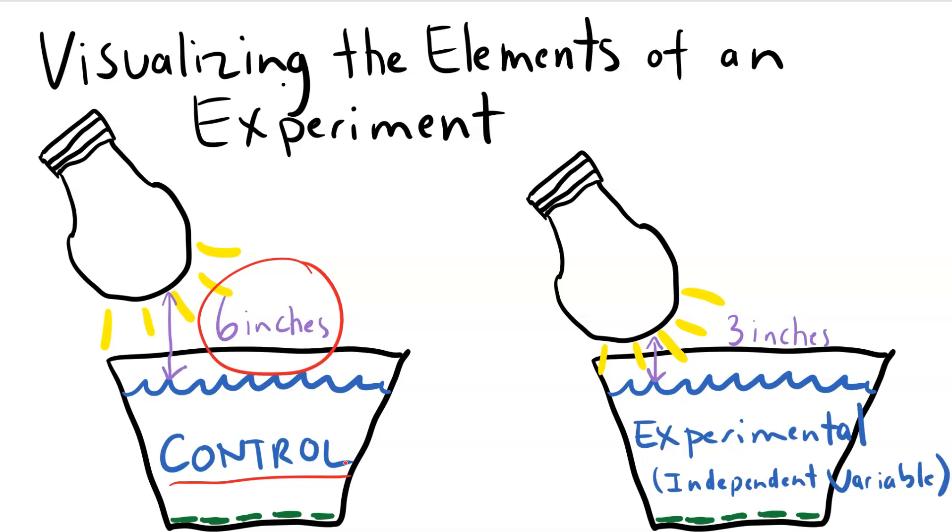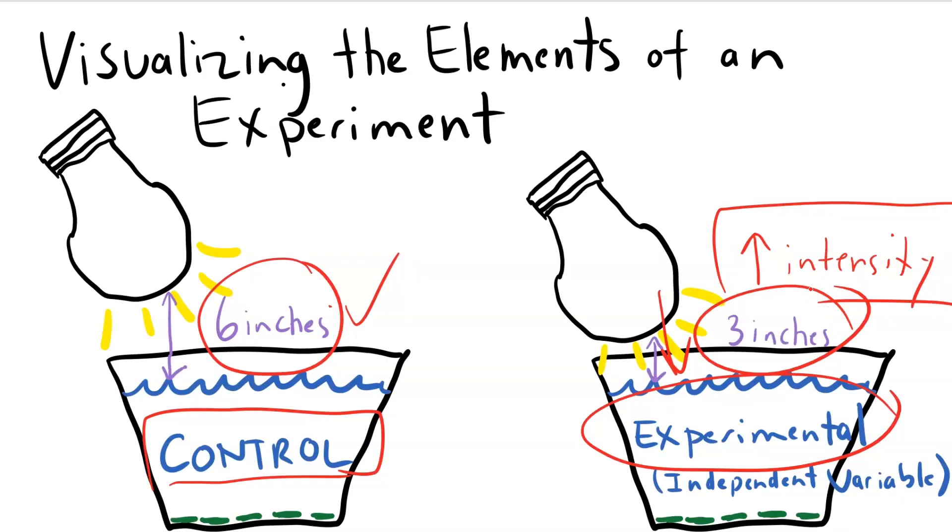Keep in mind that light intensity is the independent variable that John is studying. John hypothesized that the cup with the greater light intensity would photosynthesize better. So to increase intensity, what John has done is move this light bulb closer to the experimental subjects—to the leaf discs. This is the setup to the experiment. This is our experimental cup; this is our control cup, because this is further away over here with six inches, and the three inches over here is closer, showing greater light intensity. We're going to compare these two cups in this experiment.